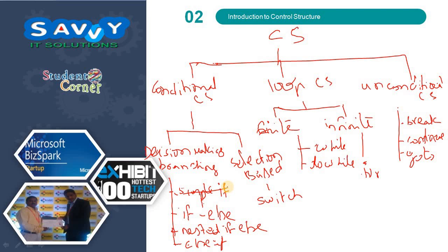First simply, we will take one video. Next, if else, next nested if else. We will explain each and every part of control structures very clearly.